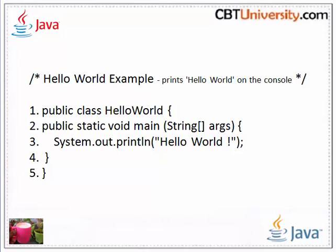Line one: public class HelloWorld. Here we are creating a class named HelloWorld and declaring it as public. Class is the keyword used to create a class. In line two, we have the main method. This is required for standalone programs.